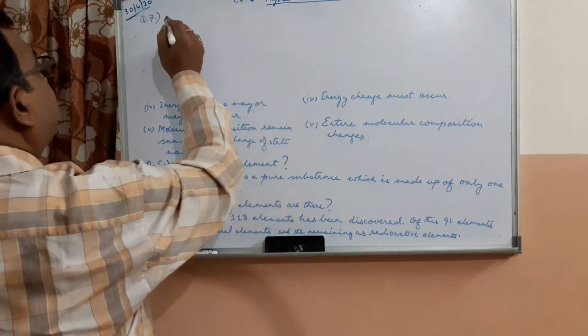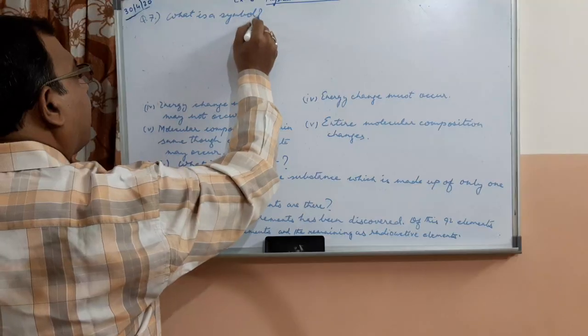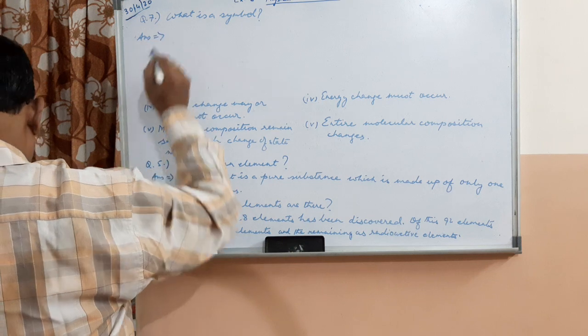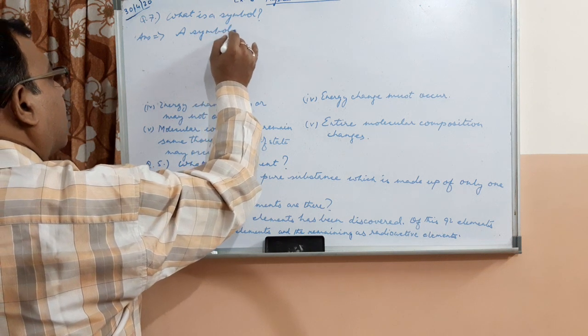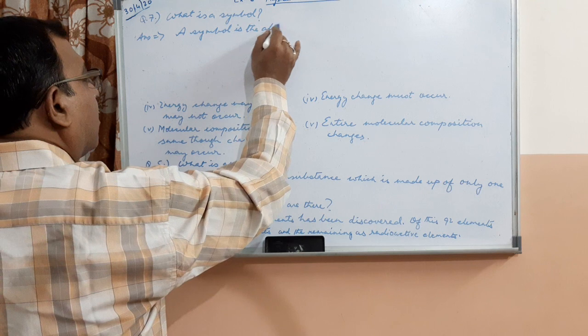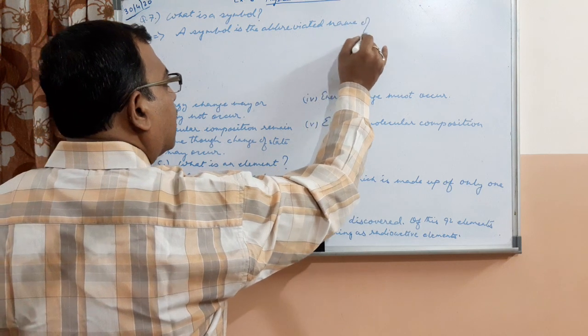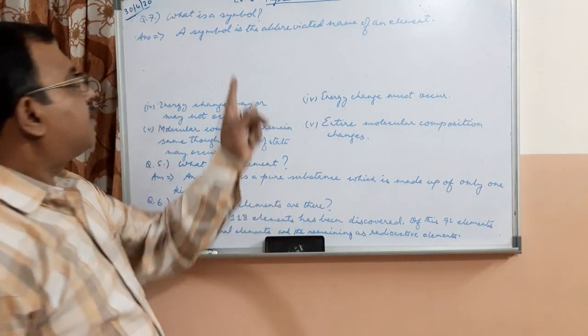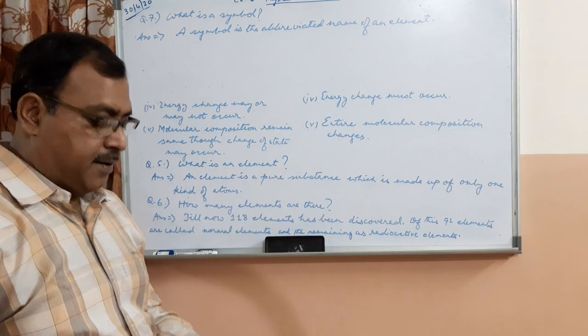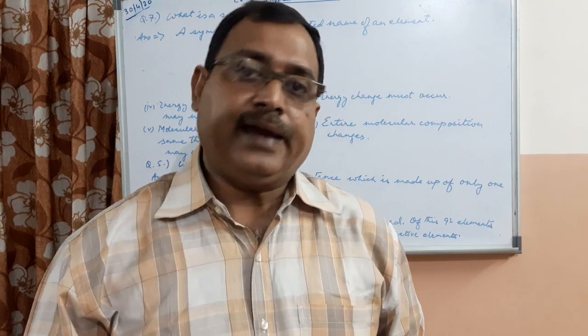What is a symbol? A symbol is the abbreviated name of an element. So children today let us do up to question number 7. In our next class I will start from question number 8. Thank you.